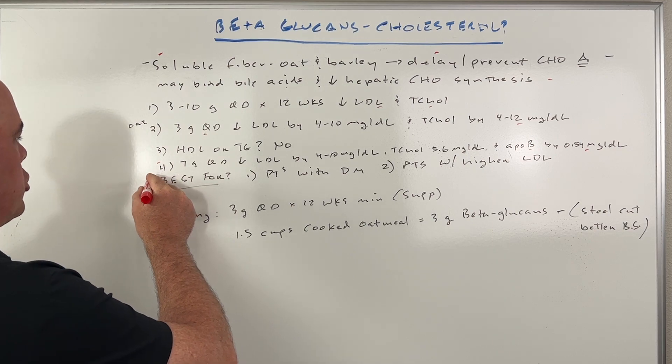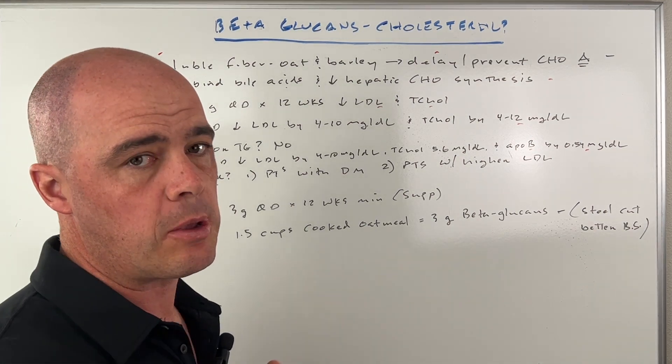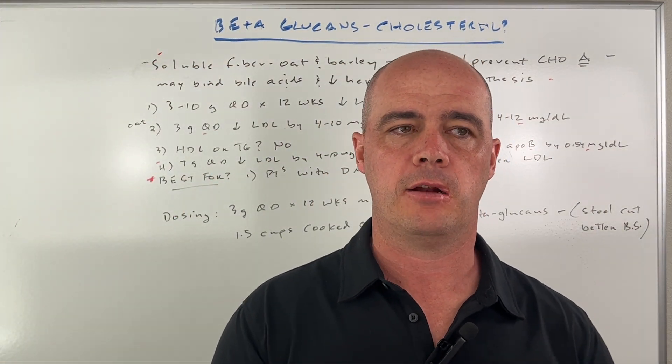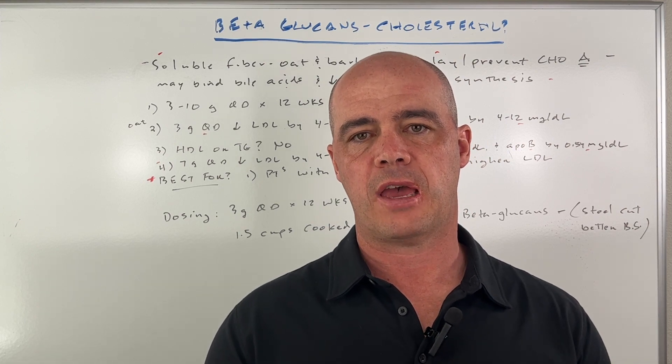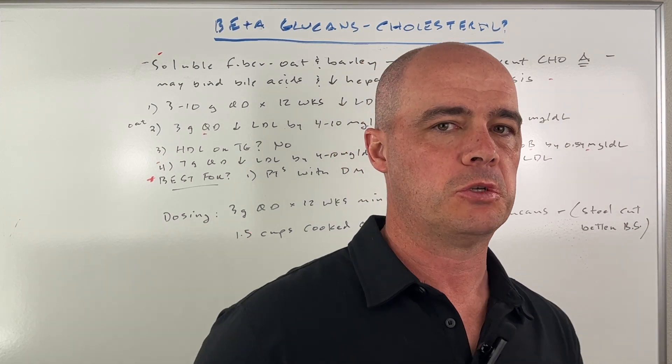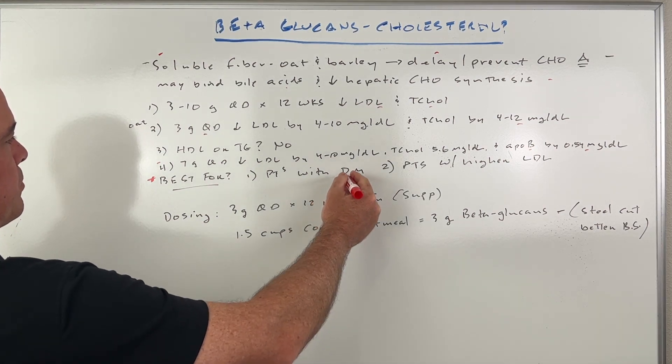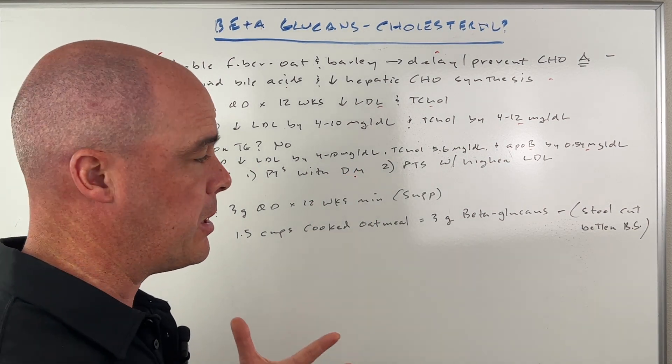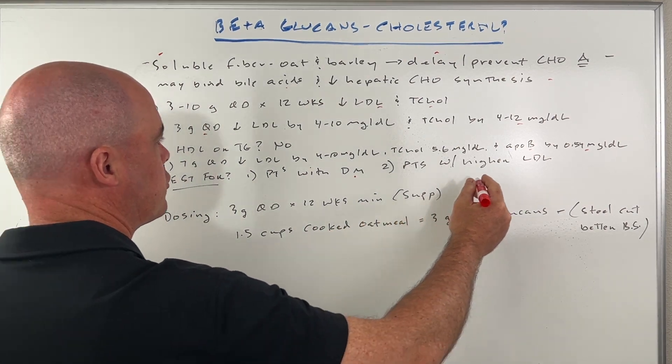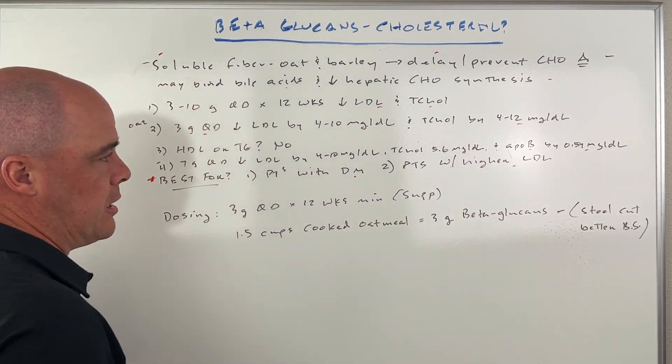Now, should you be taking a supplemental form of beta glucan? What we know is that based off the studies, there's two groups of people that it would probably be good for. One is patients with diabetes - they seem to benefit a fair amount. Also patients with a higher LDL.